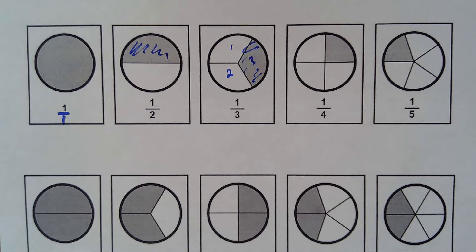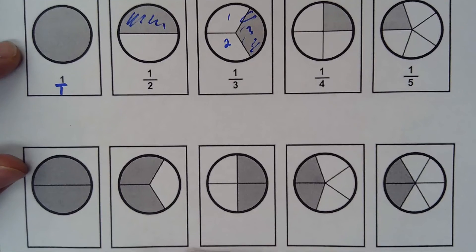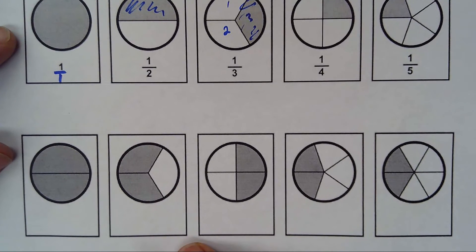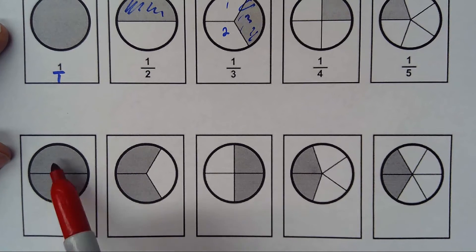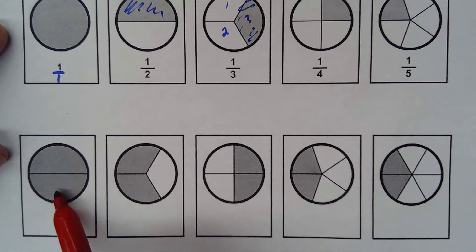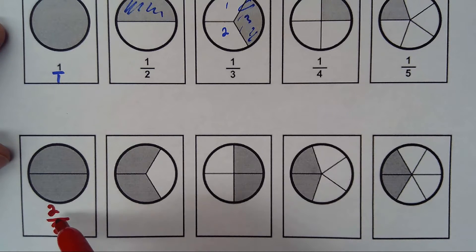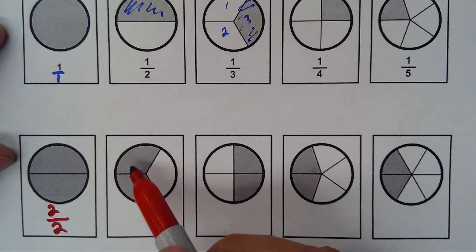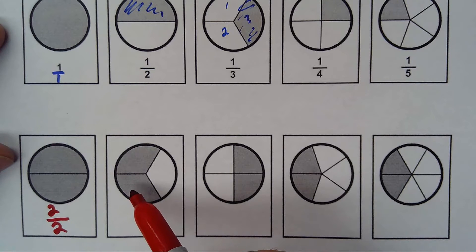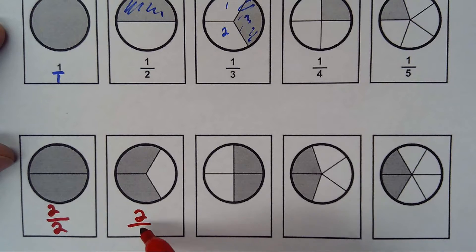Now let's do examples where we take more than one piece. Here I have it divided into two and I'm taking both, so it will be 2 over 2. Remember, 2 over 2 is equal to 1. Then here I have two regions selected from 3, so that's 2 over 3.